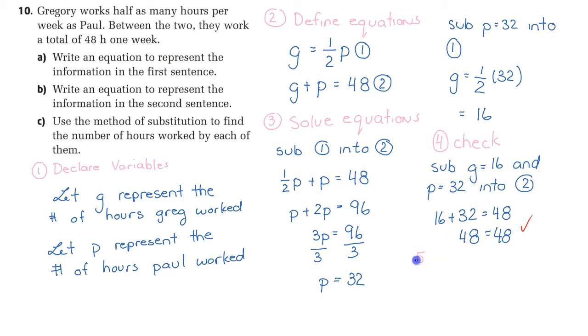The last step of the system of equations is we have to give a statement. Therefore, Paul works 32 hours and Greg works 16 hours and there's the solution to our system of equations. Again, this is a problem that requires you to set up a system of equations and solve it. It's broken up into A, B, and C to help illustrate the process of how you would do this. Typically, you would just be given the question part. You would just be given this part here and you'd have to figure out A, B, and C without those kind of hints.